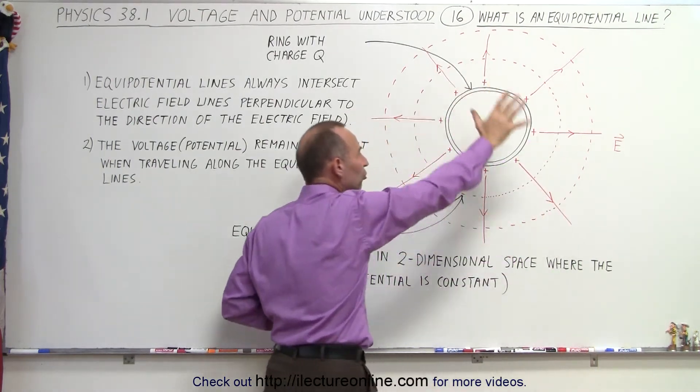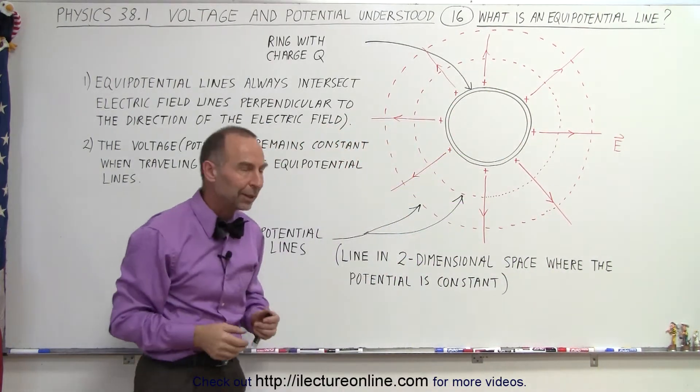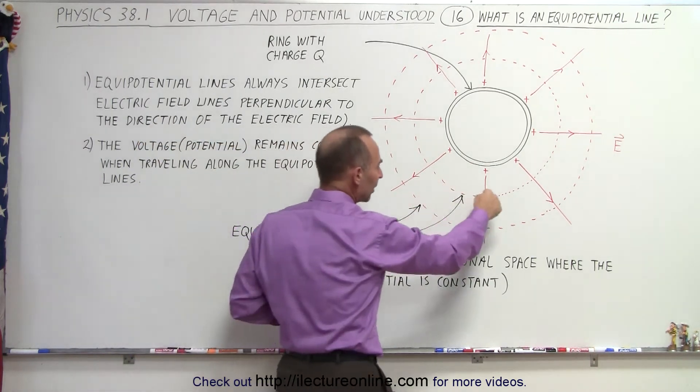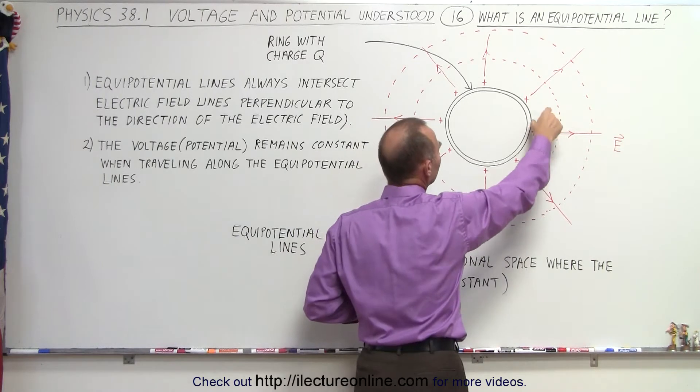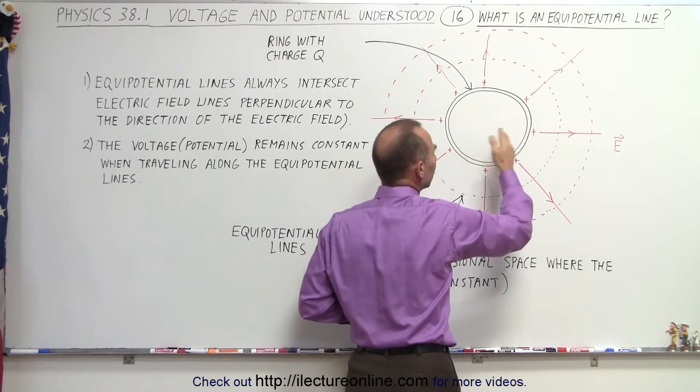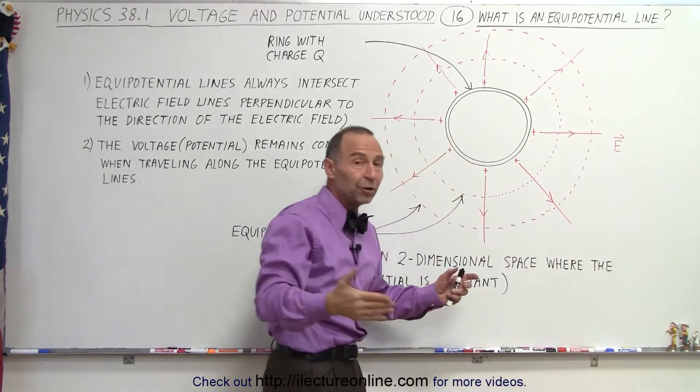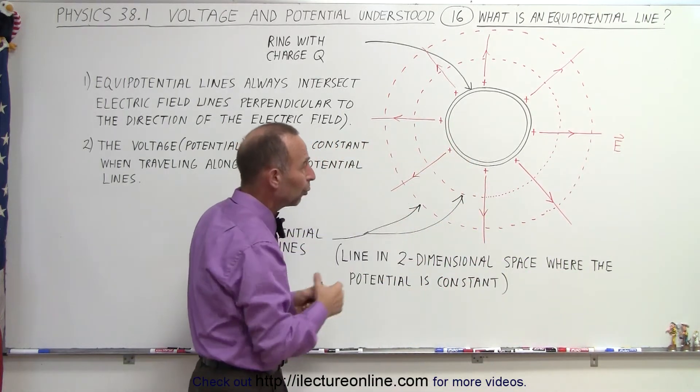Again, this is in a two-dimensional field, the XY plane. Notice I've drawn these dashed lines right here, which are parallel to the surface of that ring. We have one that's closer, one that's farther away, and we could draw an infinite number of them, all of them parallel to one another.